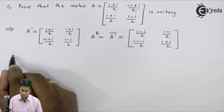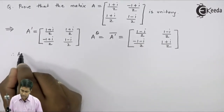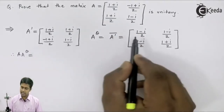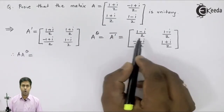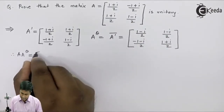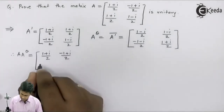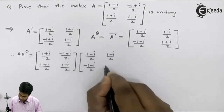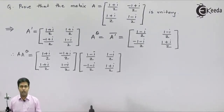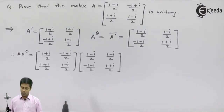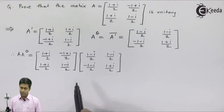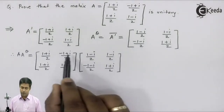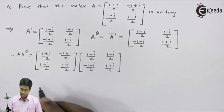Now let us find the product of A and A-theta. A is this matrix and A-theta is this matrix. I will just copy them down and then multiply these two matrices.